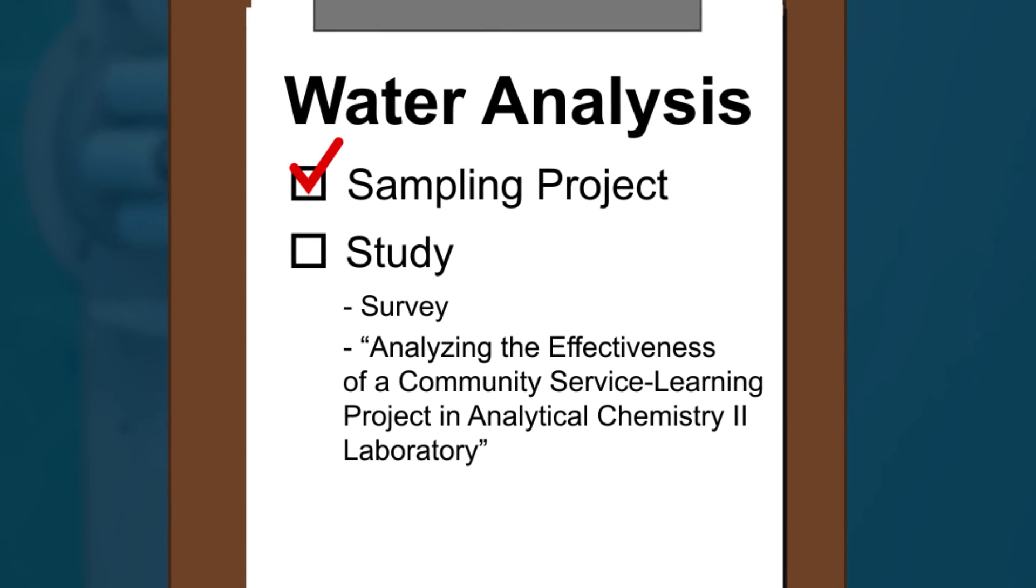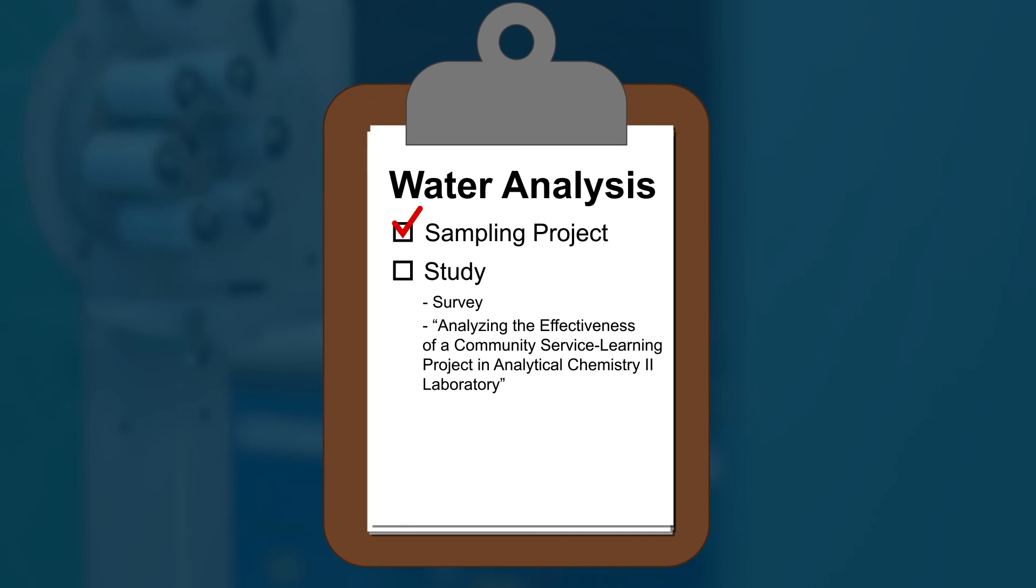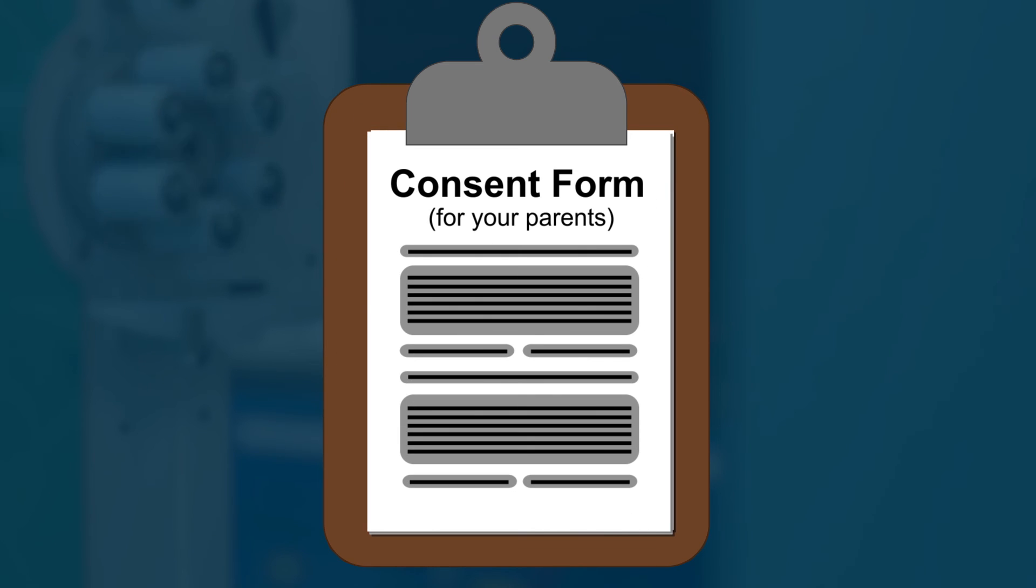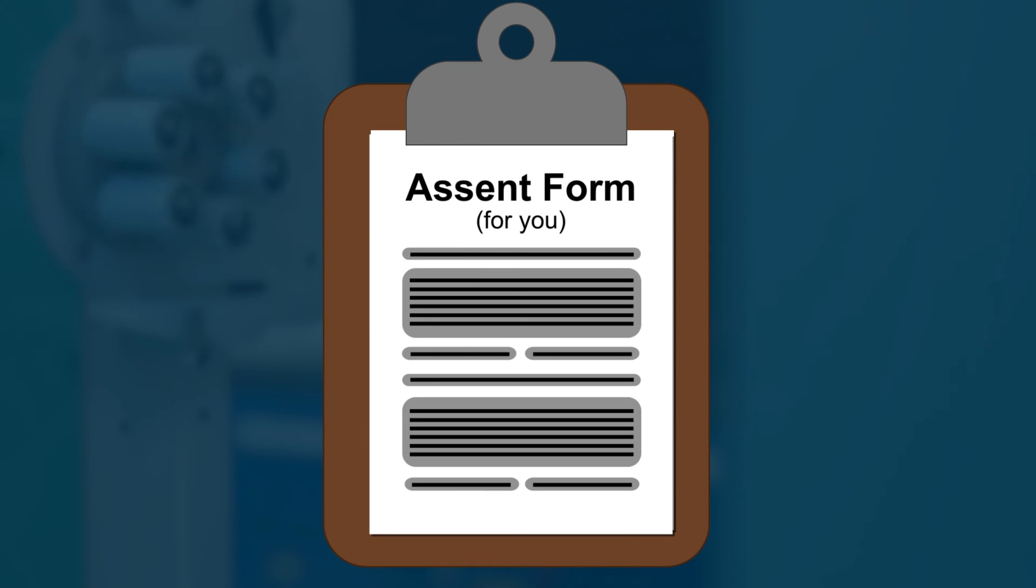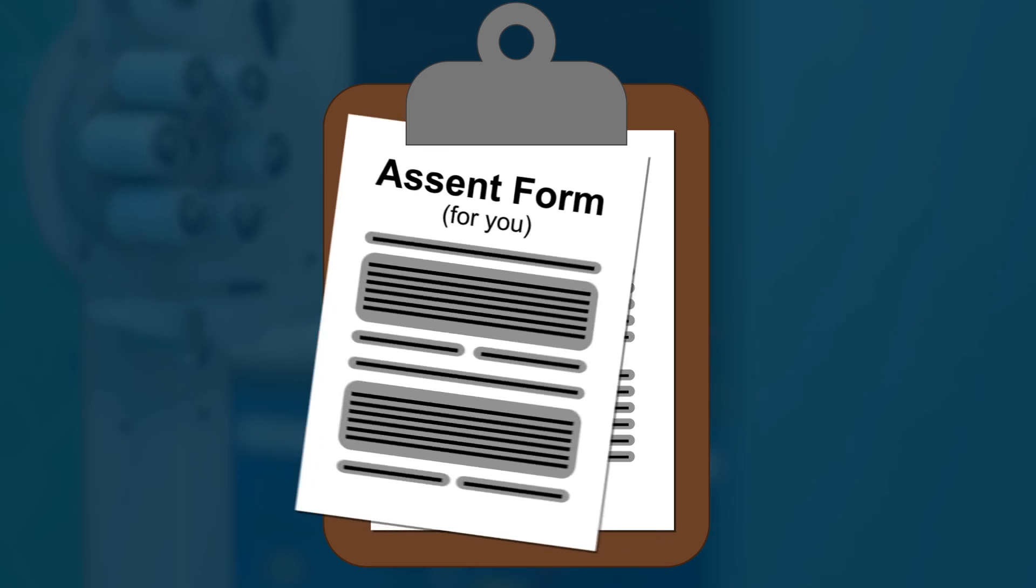The study is called Analyzing the Effectiveness of a Community Service Learning Project in the Analytical Chemistry 2 Laboratory. Your science or homeroom teacher will provide each of you with three documents to participate in this study. The first is a consent form for your parents. The second is an assent form for you. And the third is the survey itself.